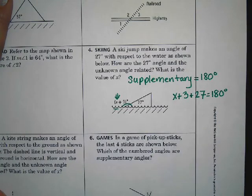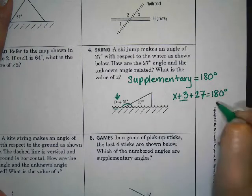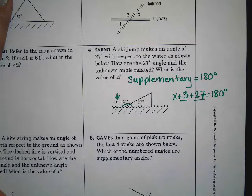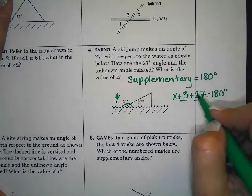Now to start solving this, we can start simplifying by combining our like terms, which are 3 and 27. So 3 plus 27 gives me 30.